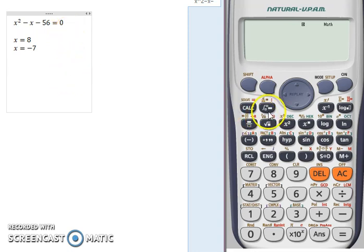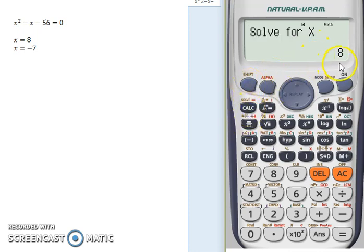So how do we do this using the shift solve function? We just type the equation. We press alpha x squared, so to produce x we press alpha and then this one x. Then minus x minus 56 and then equals zero. Upon typing the equation, we first press shift and then solve - that's why it's called shift solve.